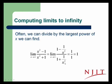Then as x gets large, 1 over x squared gets very, very close to 0. So in the numerator, it's the 1 that's the important term.